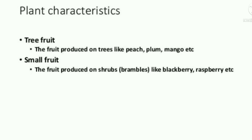Plant characteristics. Tree fruit: fruit produced on trees, like peach, plum, and mango. Small fruit: fruit produced on shrubs, like blackberry and raspberry.